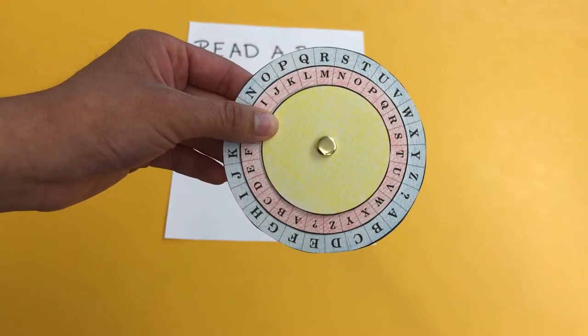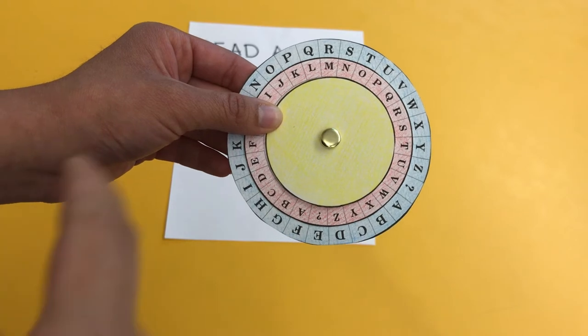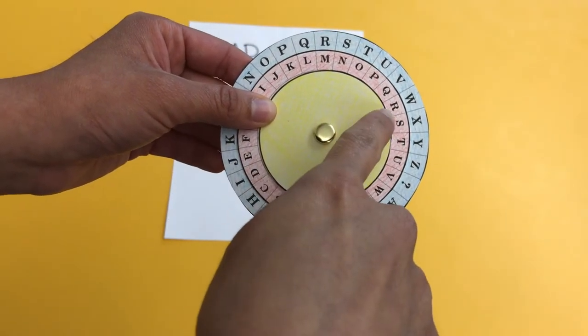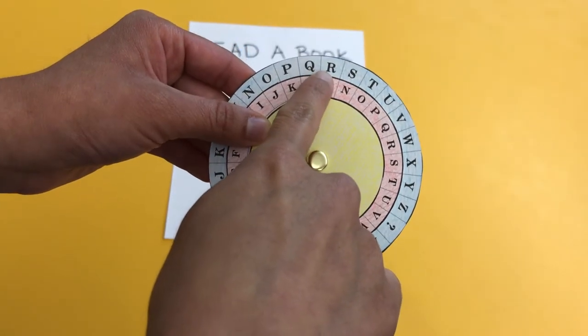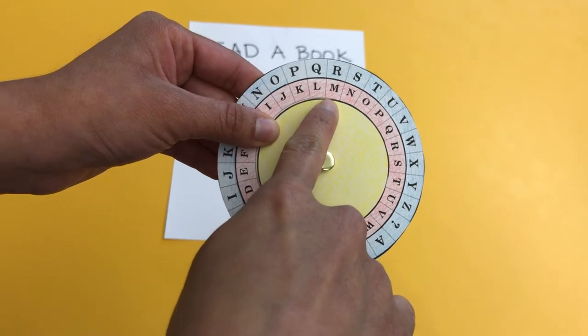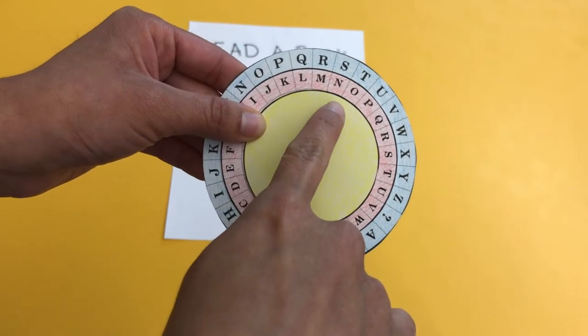Find the letter R in the big wheel and write the matching letter below in the medium wheel. It will be letter M.